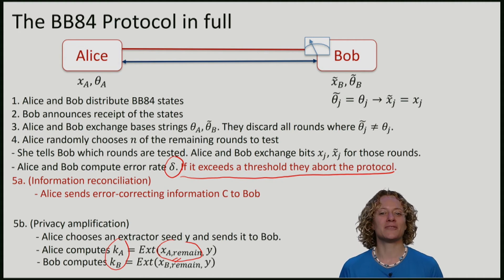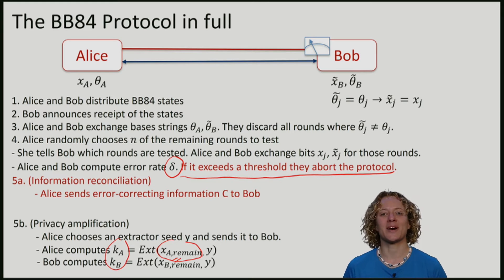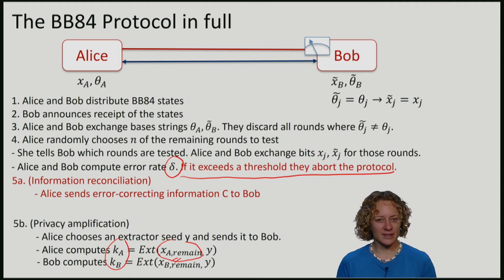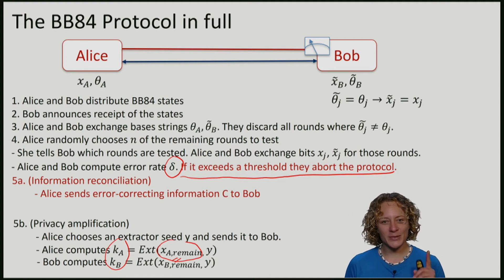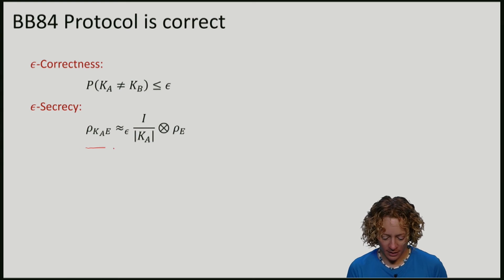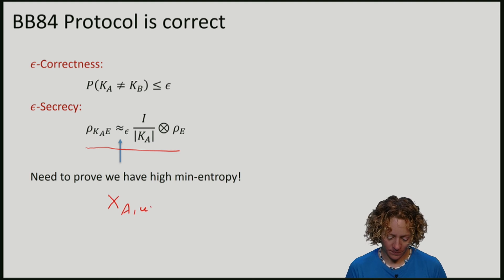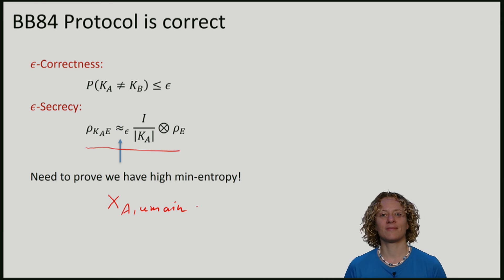Now we know that if we can make a statement about Eve's min-entropy, then by the properties of the randomness extractor — which in the context of QKD we call privacy amplification — Eve will be ignorant or almost ignorant about the resulting key. We have now seen the BB84 protocol and seen, just by stacking together our building blocks discovered over the past weeks, that the protocol is correct, or epsilon-correct. In the upcoming videos, we will discuss in depth the security of the protocol, and to show we are close to a situation where Eve is ignorant about the key, we need to show that Eve has high min-entropy about the string X_A_remain. So you are now ready to investigate the security of BB84.